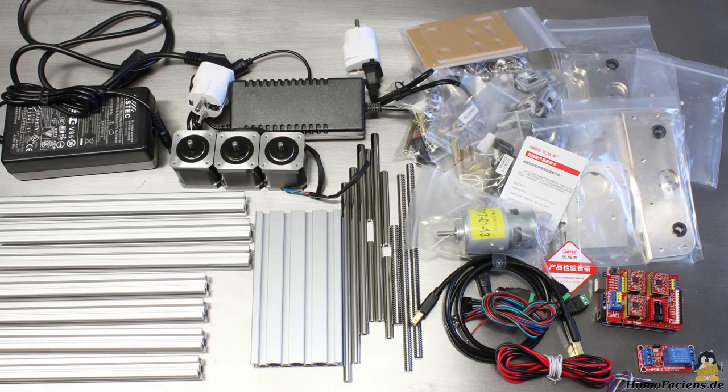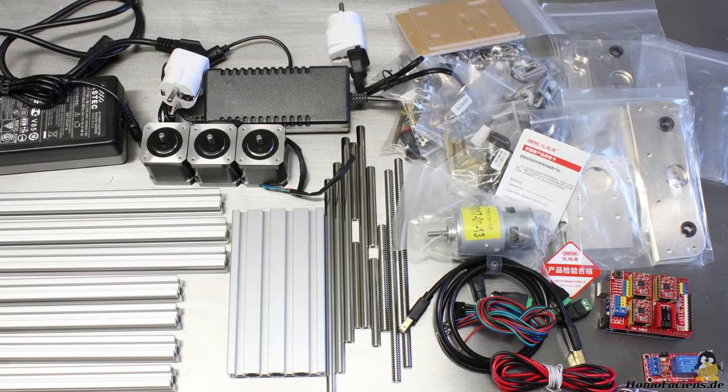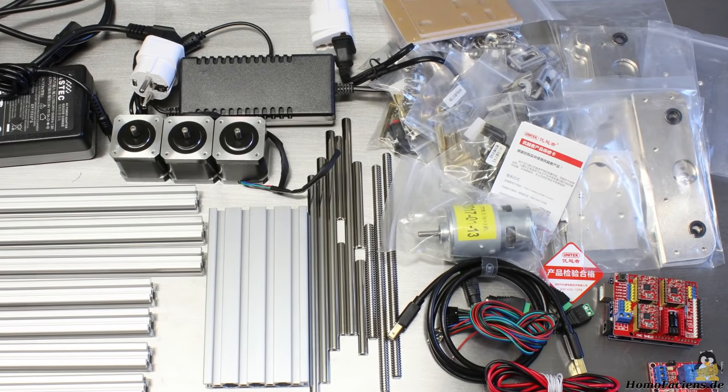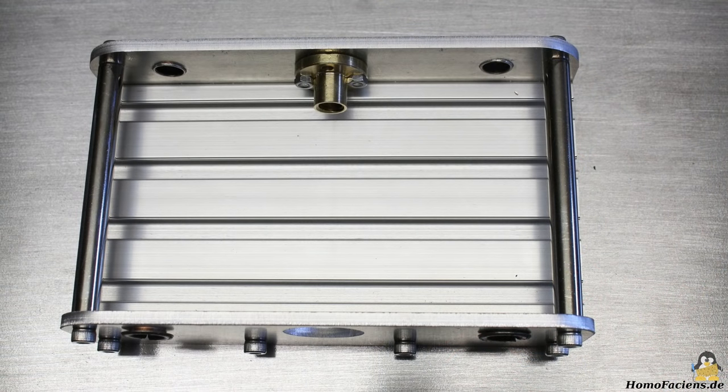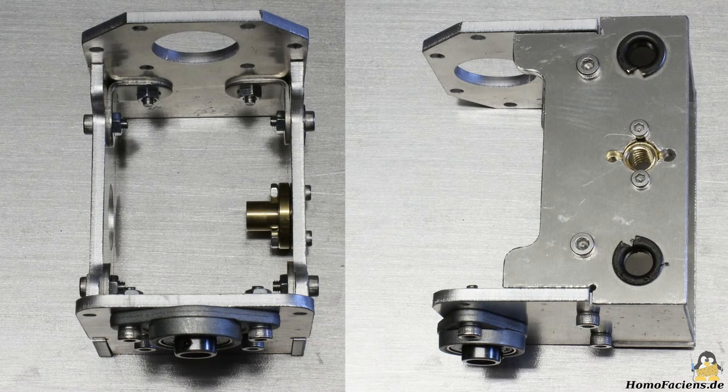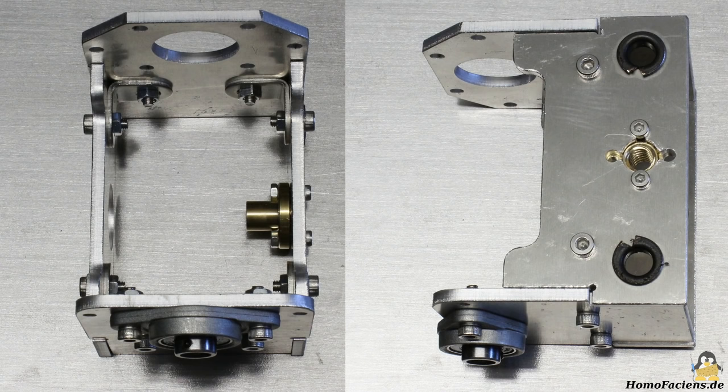The machine comes as a kit with all parts needed to create a working CNC, except a build instruction. The frame is composed of just a couple of parts so that the product photos on the Gearbest pages were sufficient to put it all together.